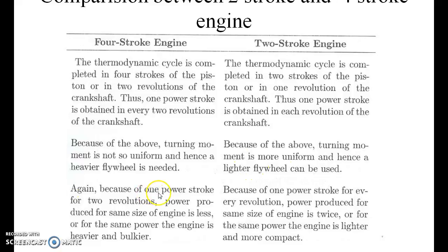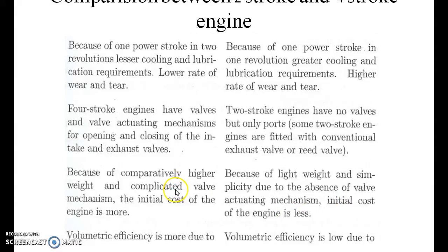Because of one power stroke for two revolutions, the power produced for the same engine size in a four-stroke is less. Because of one power stroke every revolution, the power produced for the same engine size in a two-stroke is twice as much. For the four-stroke engine, with one power stroke in two revolutions, there is lesser cooling. For the two-stroke engine, with one power stroke in one revolution, greater cooling occurs.